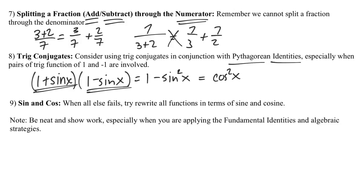And then the last strategy, sort of the if all else fails or a last ditch effort strategy, is to just try to rewrite everything in terms of sine and cosine and go from there to see if you can get to your target.